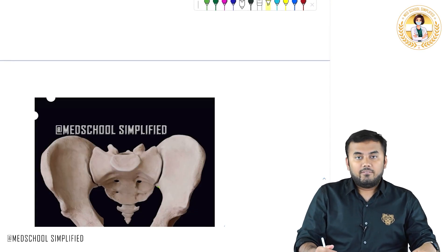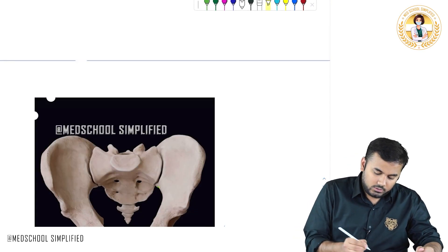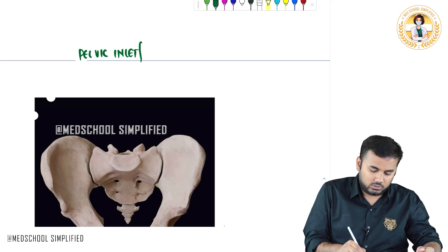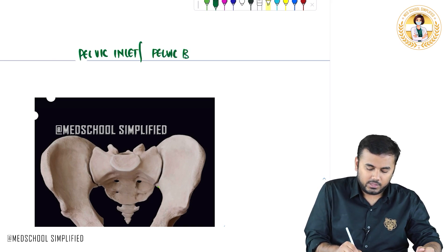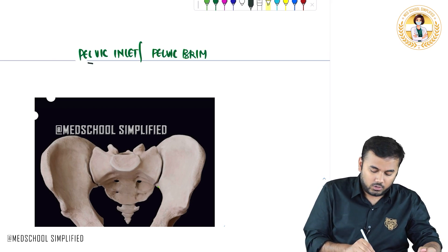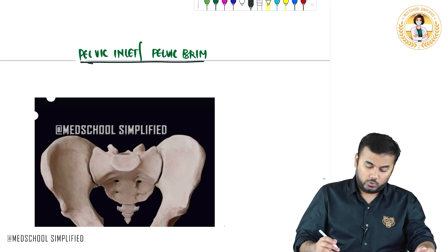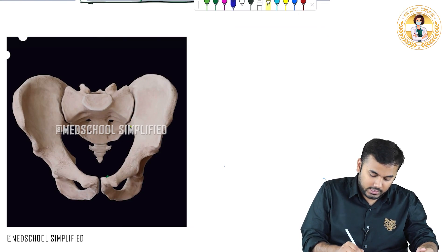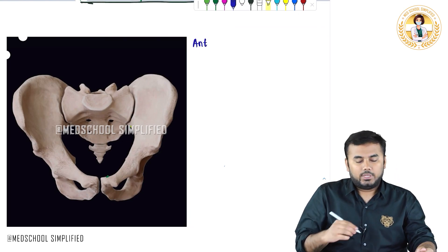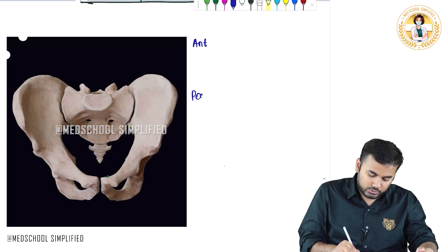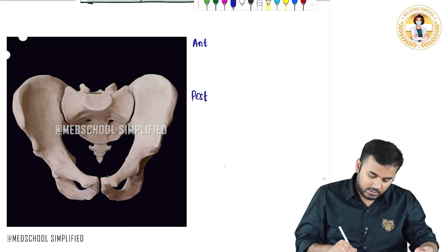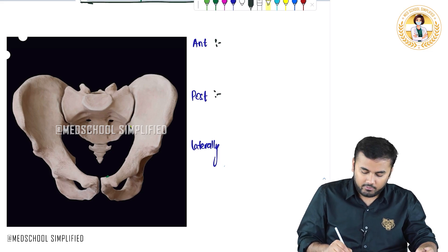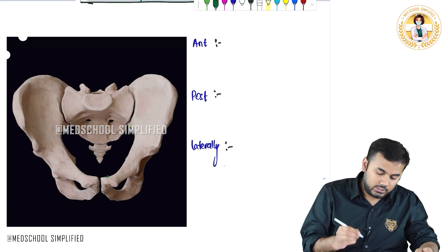We shall now discuss the pelvic inlet, which is also called the pelvic brim. First, we will look at the borders of the pelvic inlet or pelvic brim. As you can see in this picture, there is an anterior end, a posterior end, and lateral ends on either side. We will look at what is present anteriorly, posteriorly, and laterally.